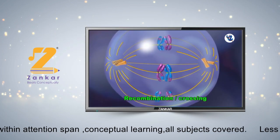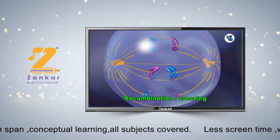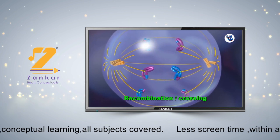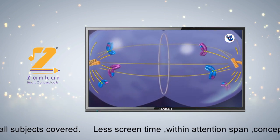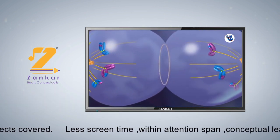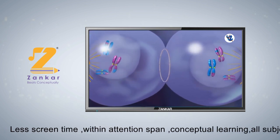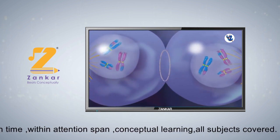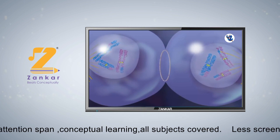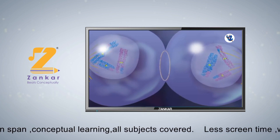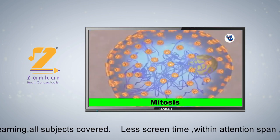In Meiosis I, recombination or crossing over occurs between homologous chromosomes, and thereafter those homologous chromosomes are divided into two groups, and thus two haploid cells are formed.